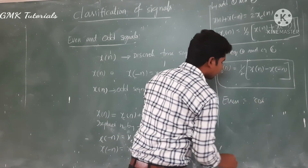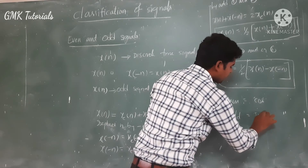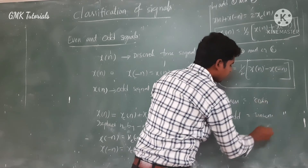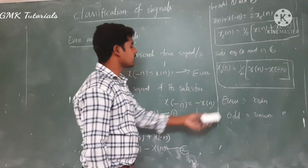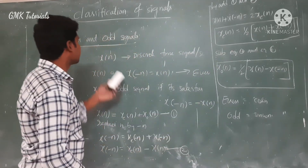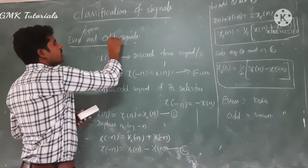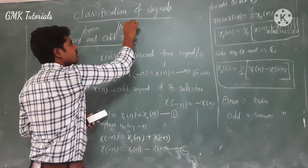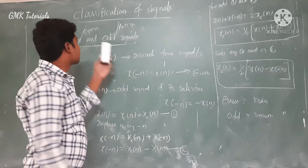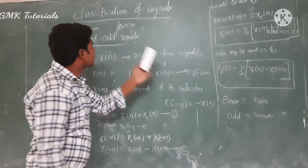A general example of an even signal is the cosine signal, since cosine is an even function. For the odd condition, an example is the sine signal. An even signal is also called a symmetric signal, and an odd signal is also called an anti-symmetric signal. These are the alternate names. With this, our classification of signals topic is complete.